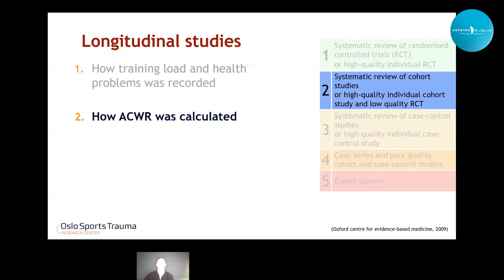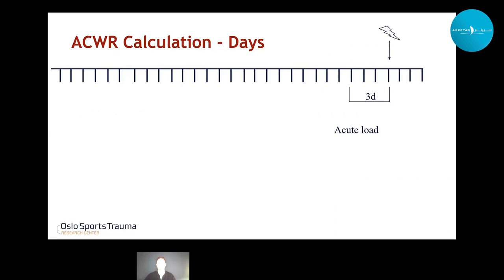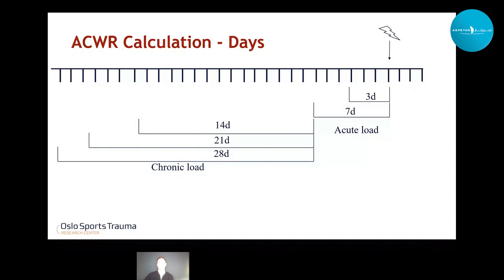The next group of problems is how ACWR has been calculated. Even though the metric itself is simple — you divide one number by the other — there are actually a lot of things you can change. The acute load has in some cases been three days, sometimes nine, but most usually seven days. For the chronic period it has ranged from roughly 12 to over 30 days, although the most common is two, three, or four weeks. The most common combination is seven days to 28 days.